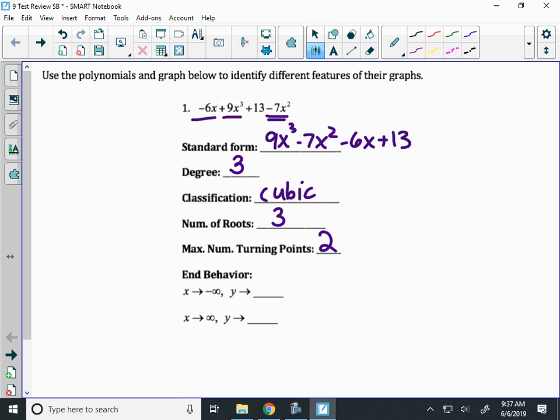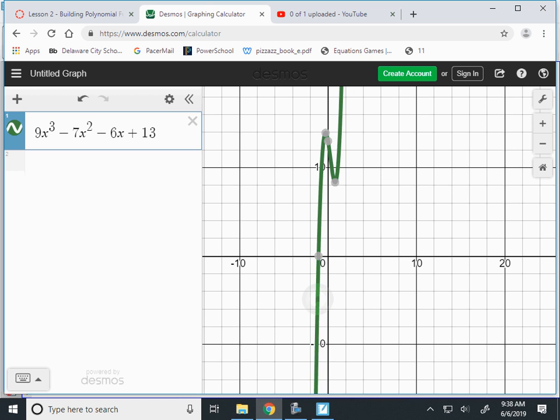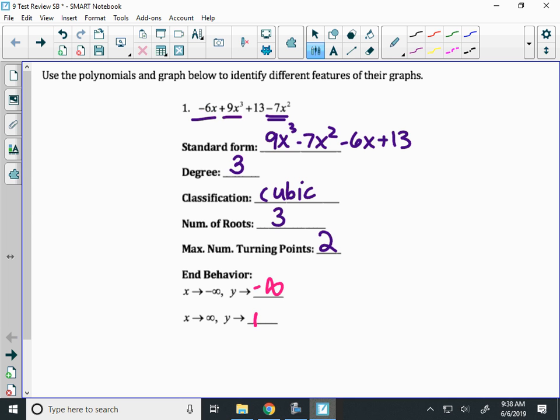If you don't know about the end behavior of the graph, go ahead and graph it. You get to use your graphing calculator in this unit. So I have 9x to the third, minus 7x squared, minus 6x plus 13. All right, here's my graph. I can look on the left, my arrow is going down towards negative infinity. And on the right, the arrow is going up to positive infinity. So that will be the end behavior.